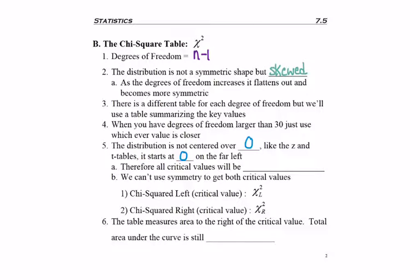If we think of a number line starting at zero and then moving to the right, this means that all of the critical values are going to be positive, greater than or equal to zero. I mean I guess technically they could be zero because it starts there, but they'll all be positive numbers. But this also means that we cannot use symmetry to find our critical values. We're going to have to get both of our critical values individually.